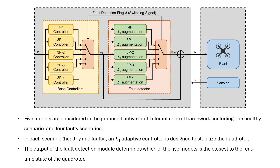In each scenario, an L1 Adaptive Controller is designed to stabilize the quad rotor. The parameters of L1 Adaptive Control across all scenarios remain the same. The fault detection module compares the uncertainty estimates of all five models and determines the model that is closest to the real-time state of the quad rotor.